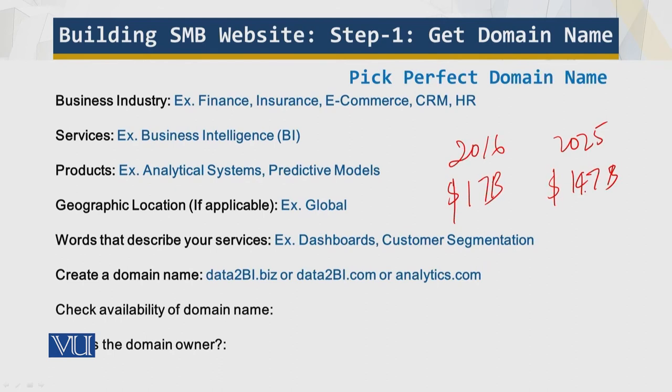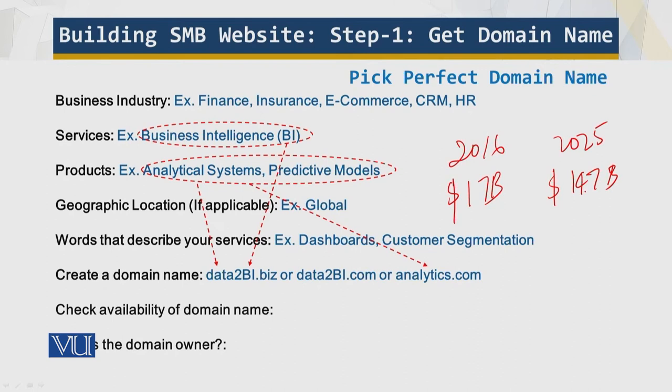Based on those services, you create a domain name. As you can see on screen, since you are dealing with data, the word 'data' is in the domain name; since you are dealing with business analytics, 'bi' is in the domain name; and analytics is represented as well. You need to check whether that domain name is available, because a domain name must be unique — no two domain names can be the same.